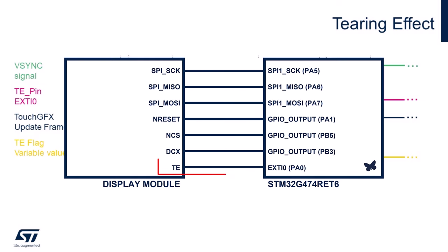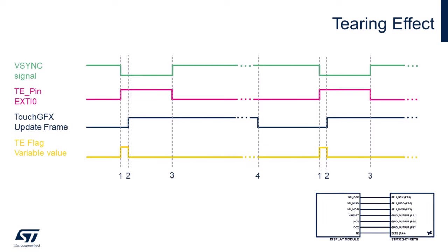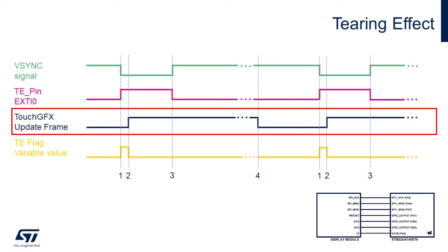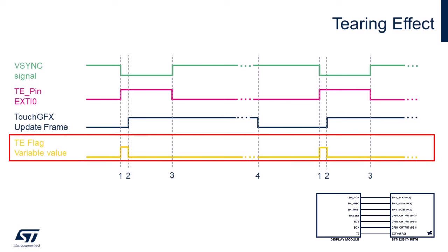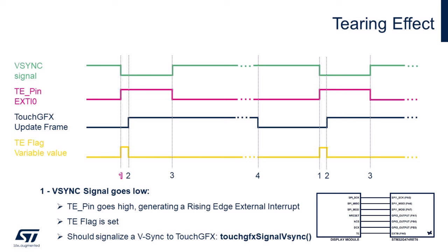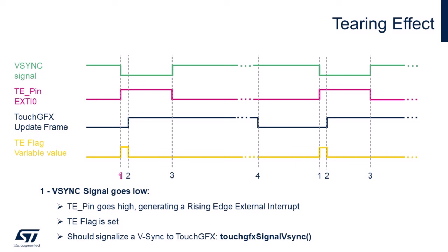The next signal is the TouchFX update frame, which represents the time that TouchFX is sending a frame to the display. And finally, we have a signal that reflects the content of a variable flag. During the first edge, the VSync signal goes low, which causes a rising edge at the tearing effect pin, resulting in a rising edge interrupt on the MCU side. Within this interrupt callback, we will add code to set the TE flag to register that a VSync pulse has occurred. The most important action at this point is to call the TouchFX signal VSync function, which must be called every time a VSync pulse occurs.